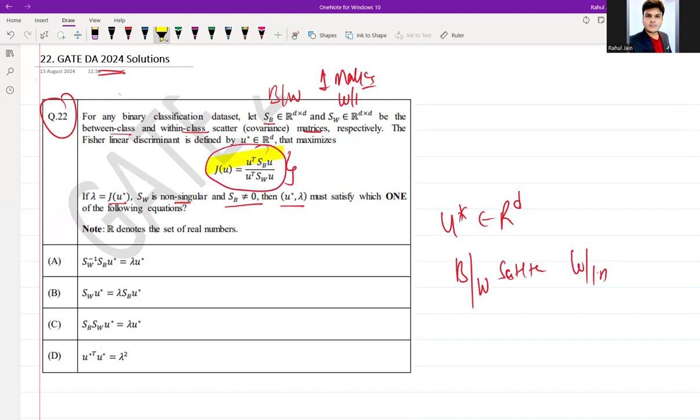This is expressed as an objective function, which is given in the question. Sb and Sw are defined as between-class and within-class matrices respectively. The optimal projection vector u* that maximizes j(u) satisfies the following eigenvector equation.